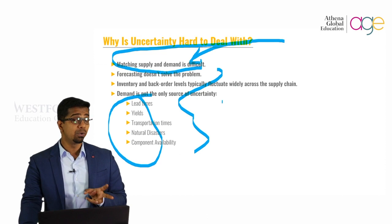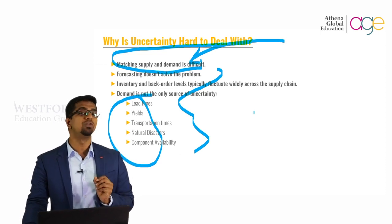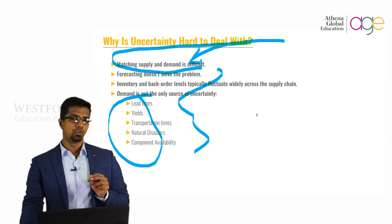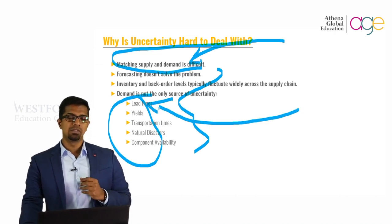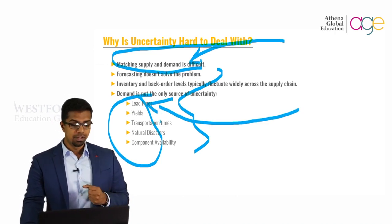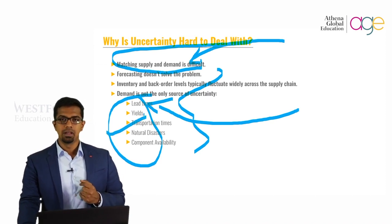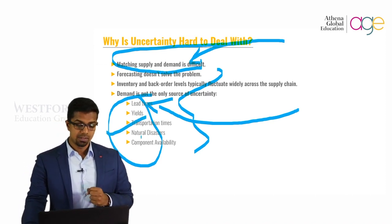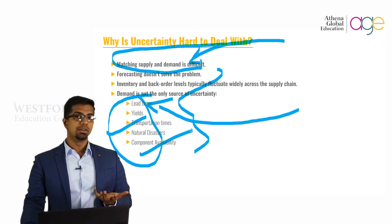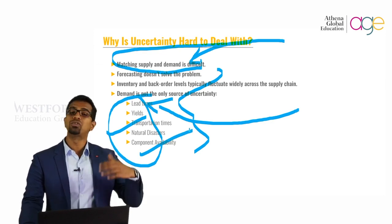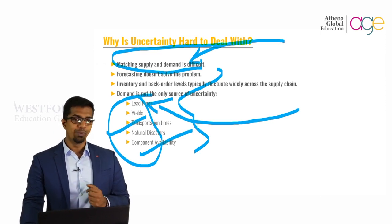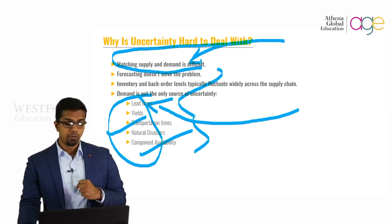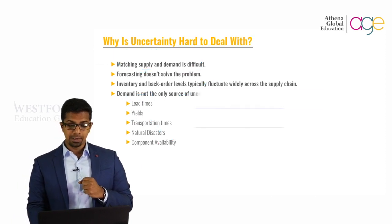You have to understand that demand is not the only source of uncertainty. You also have lead times, yields, transportation times, natural disasters, and component availability. There are so many factors which act as causes of uncertainty.